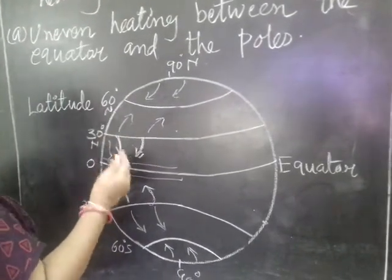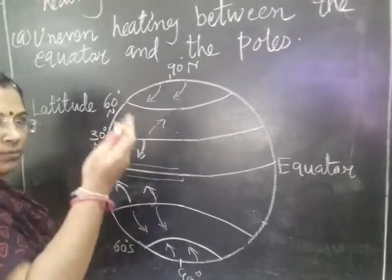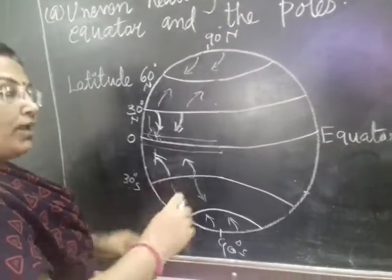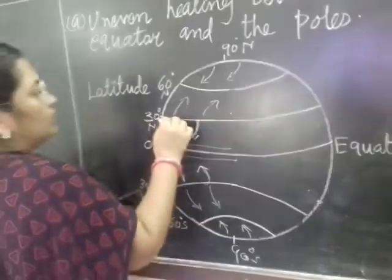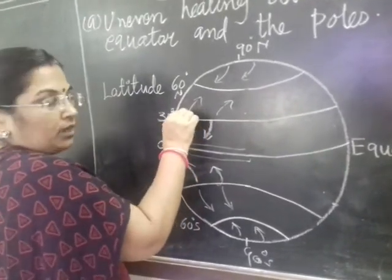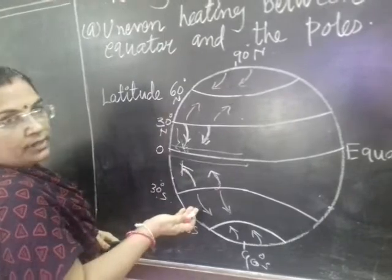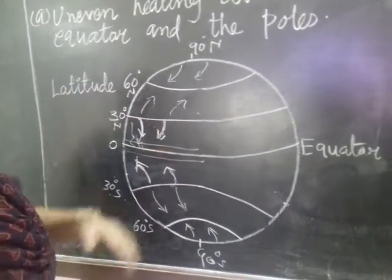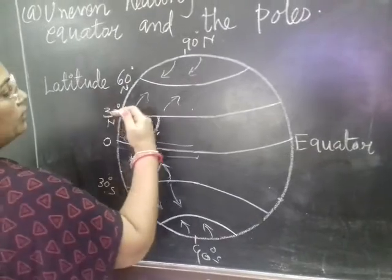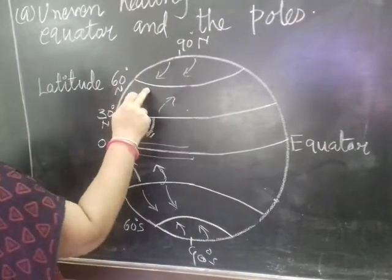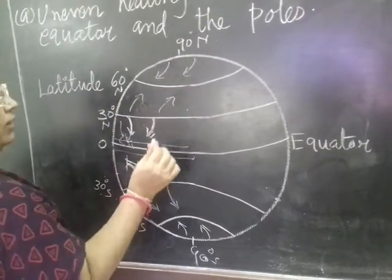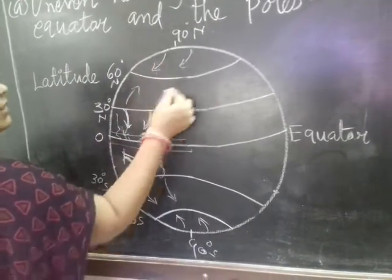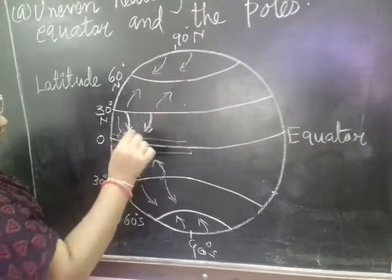Now, when air rises up, it starts to cool down again. When it cools down, it moves towards either 30 degree north or 30 degree south. So it means either of the side, the wind current will flow. And from here, it will start to blow towards 60 degree. So from here it will rise up and move towards 30 to 60 degree. And this way, the current will blow like this.